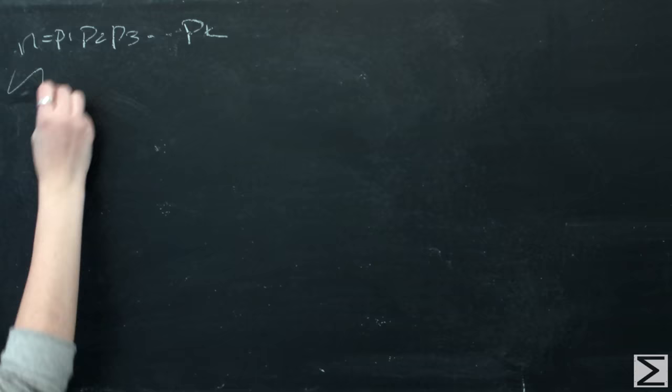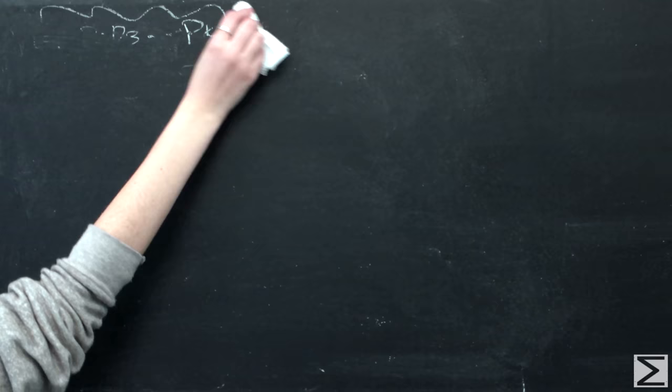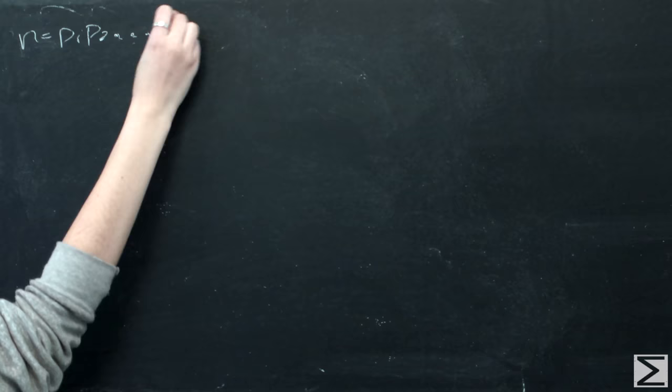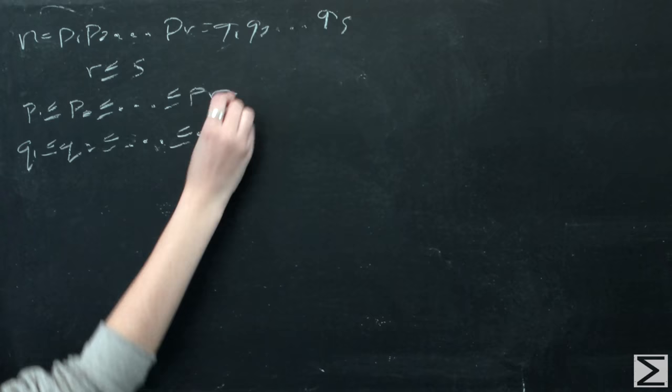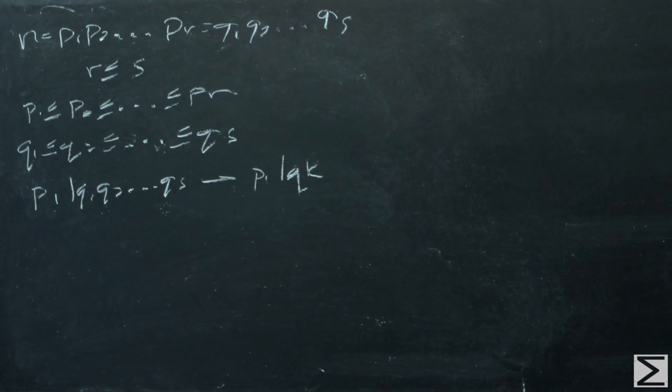The second part of the proof deals with the uniqueness of prime factorization. Suppose we say that the prime factorization of an integer can be written in two ways, one where pi equals all primes and qi equals all primes, both in increasing order. We can say that p1 is a divisor of q1 through qs, and therefore is a factor of some qk for some k.